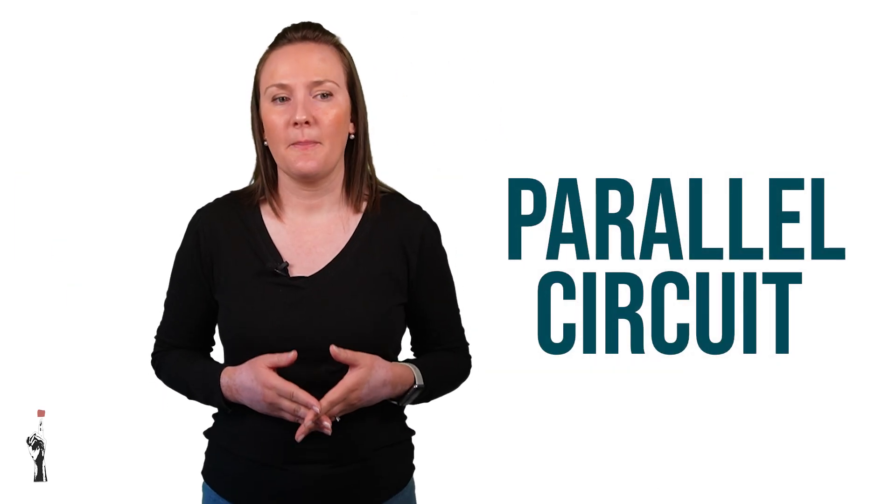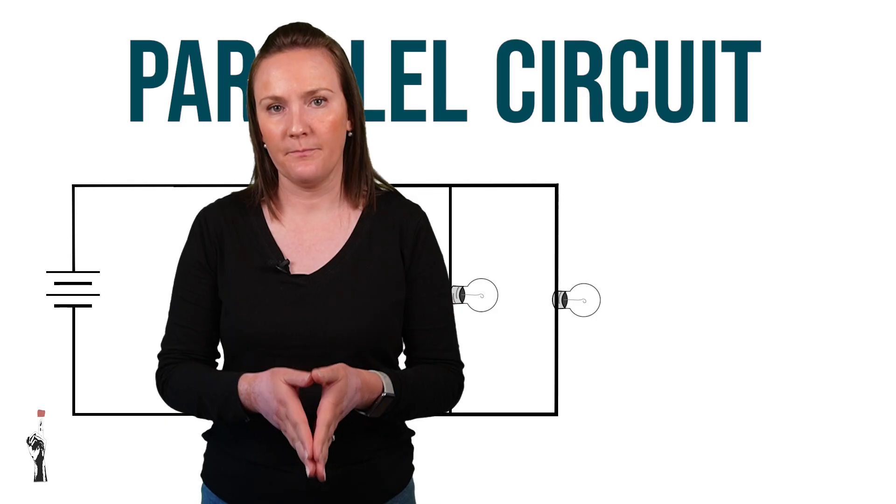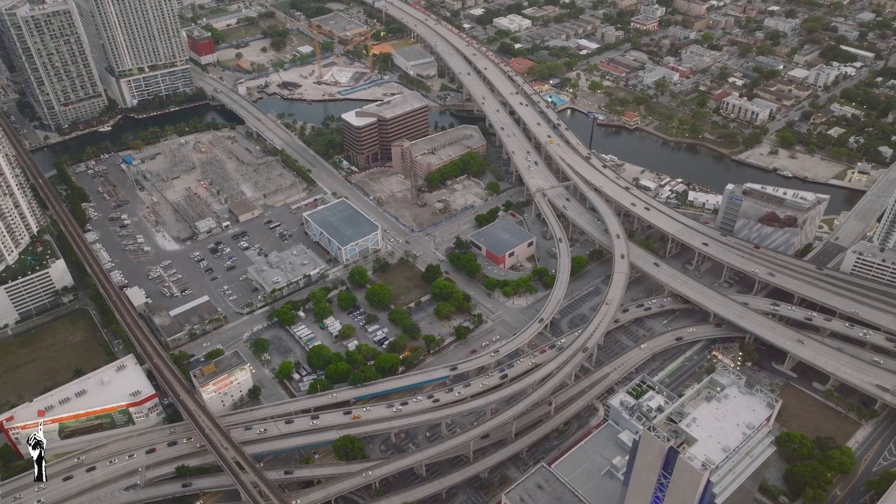The other circuit is a parallel circuit. This setup gives each component its own branch, like side roads off a main highway.